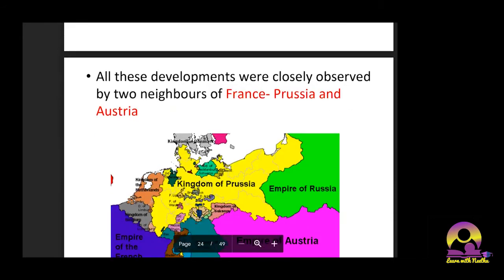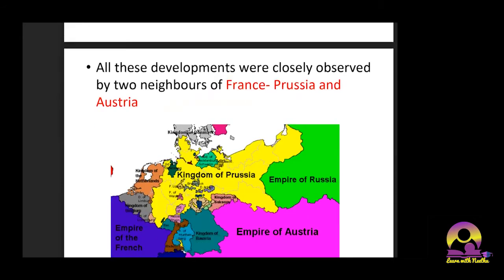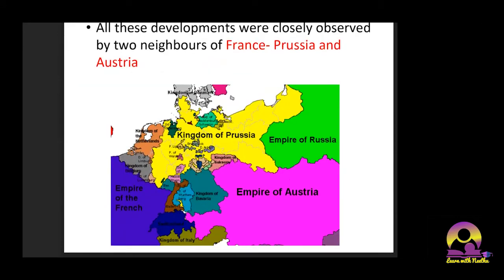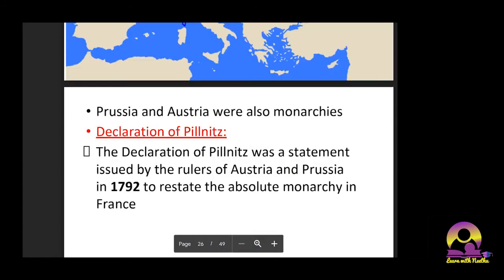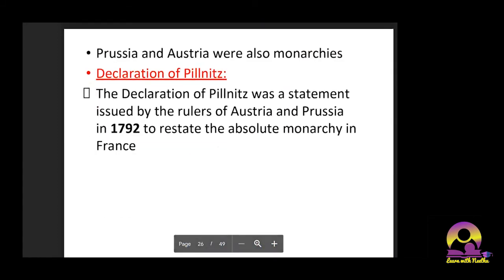All these developments were closely observed by France's two neighbors: Prussia and Austria. They also had monarchies, and anything happening against monarchies in a nearby country would obviously affect ideologies in their own countries. They issued something called the Declaration of Pillnitz, stating they would reinstate the absolute monarchy in France. Austria and France also had a family relationship, which was one of the reasons.